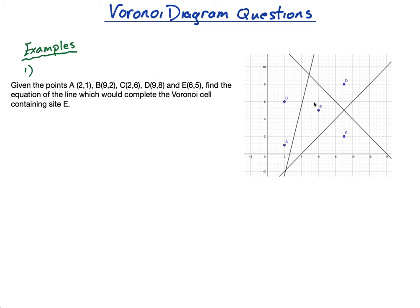The first type of question is they give you an incomplete Voronoi Diagram with points A, B, C, D, and E, and they say find the equation of the line that would complete the Voronoi cell containing site E. So cell E is the site but it's incomplete. They've drawn the perpendicular bisector of E and D, the perpendicular bisector of E and B, and the perpendicular bisector of C and E. What they haven't drawn is the perpendicular bisector of E and A — so we're looking for the equation of that line.